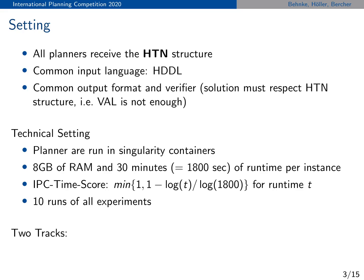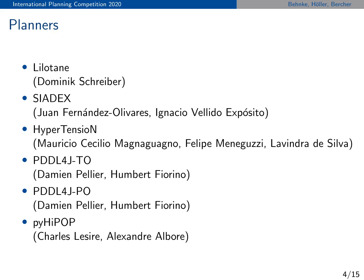We have two tracks: a total order and a partial order track. In the total order track, the methods of all domains are sequences, while in the partial order track we don't have this guarantee. We have in total six planners participating in the IPC: Lylotane, Ciadex, Hypertension, PDDL4J in two versions, and PI HIPOP. Of course there are more HTN planners out there — some wanted to participate but couldn't in the end, and our own planners also didn't take part out of fairness reasons.